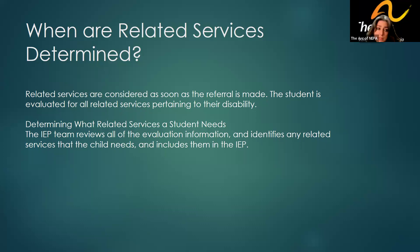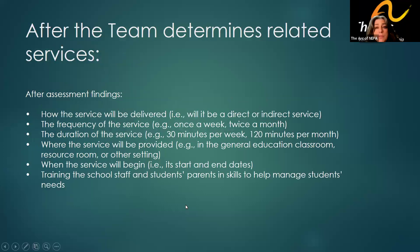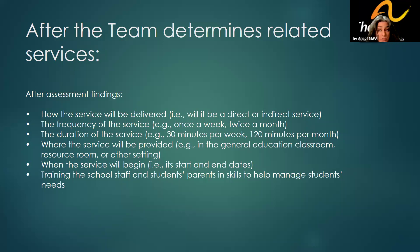In determining what related services a student needs, the IEP team is going to review all the evaluation information and identify any related services that child needs, and they will include them in the IEP. After the team determines the related services needed, they will also talk about how the services are going to be delivered.